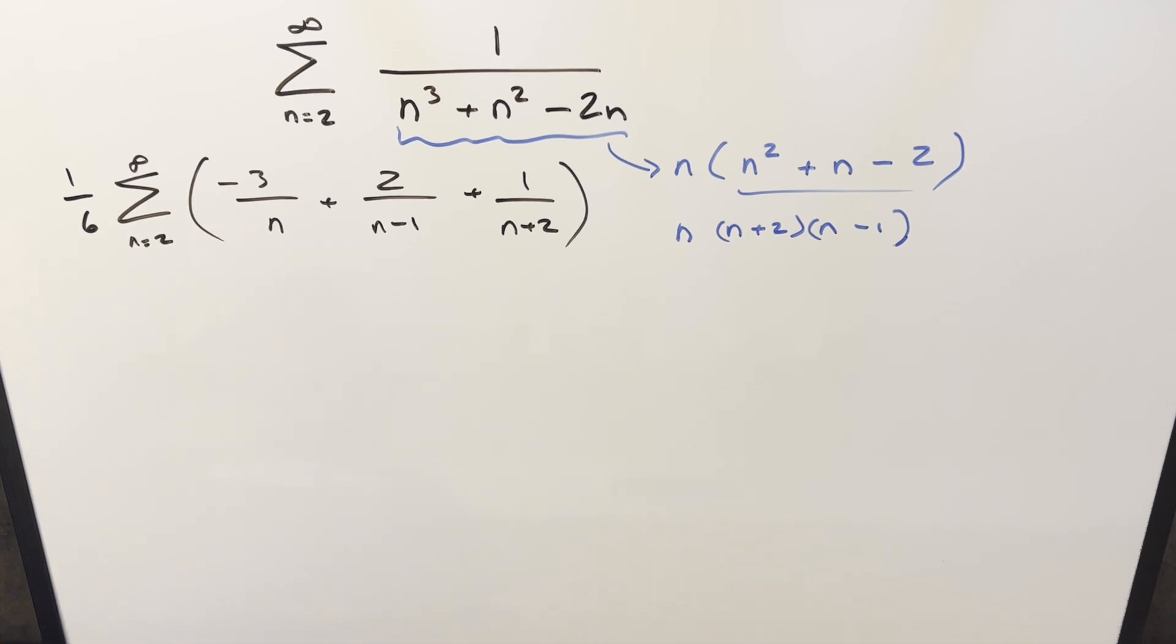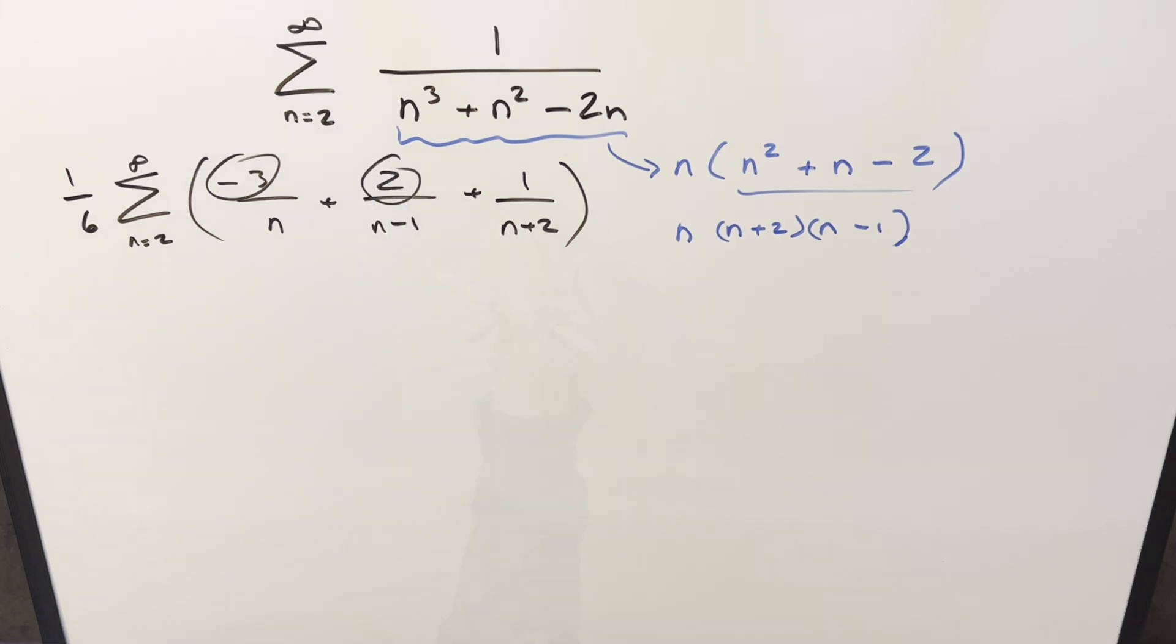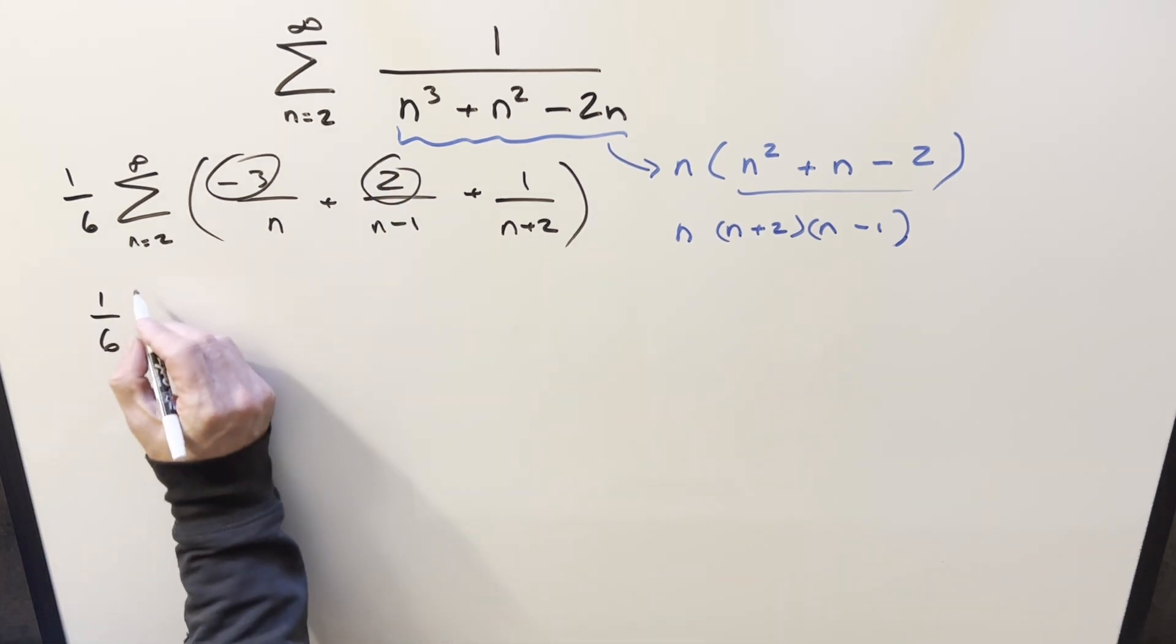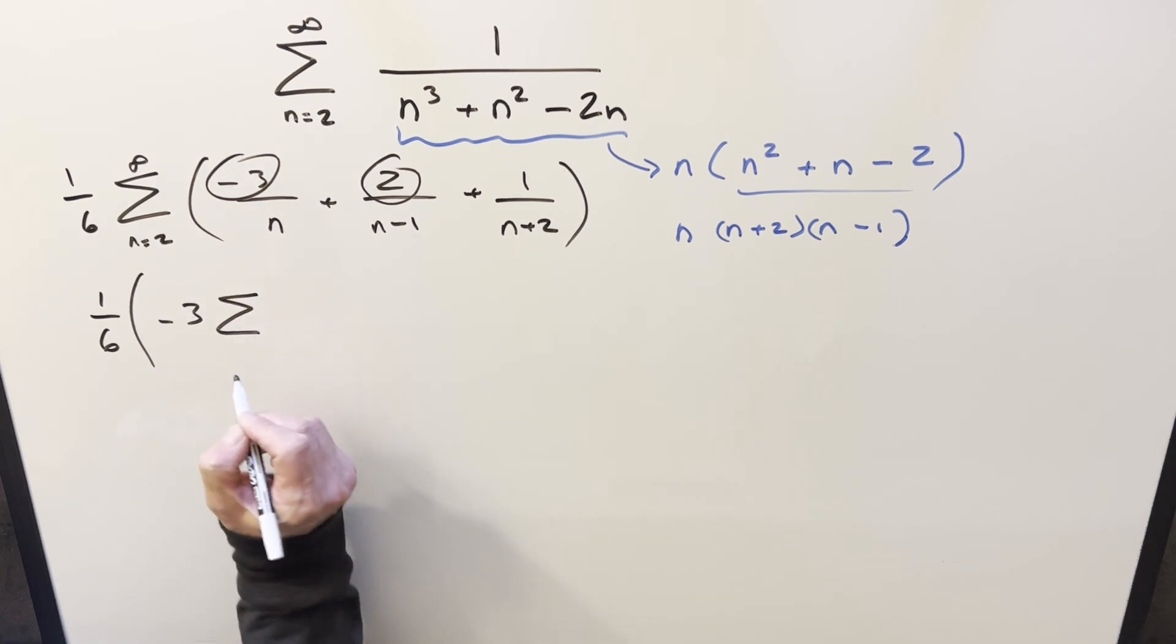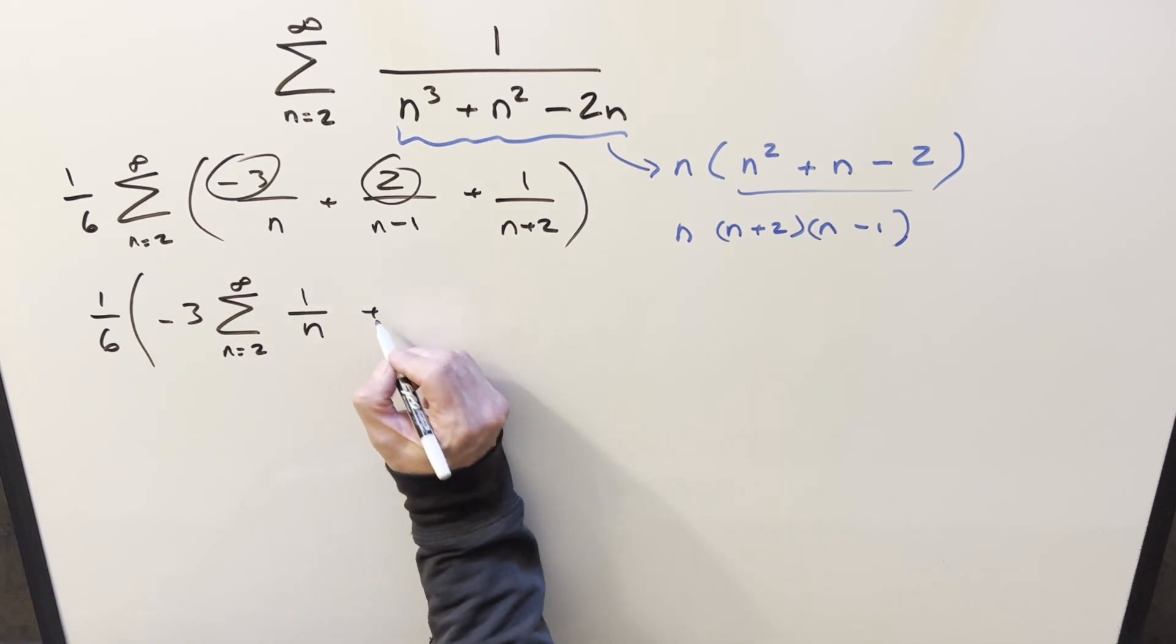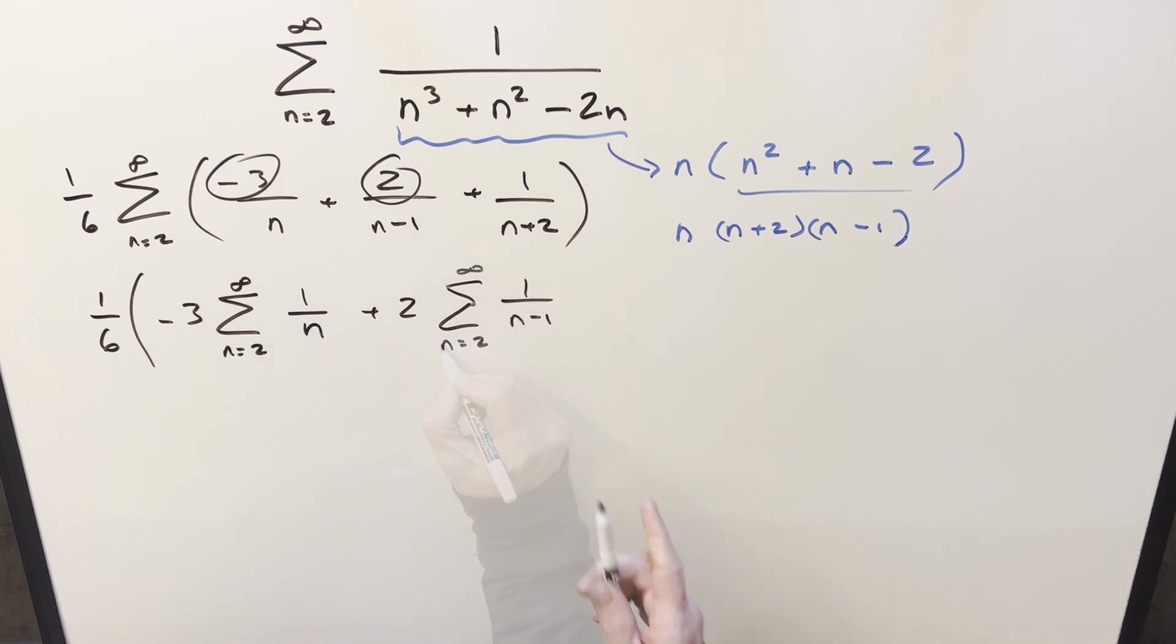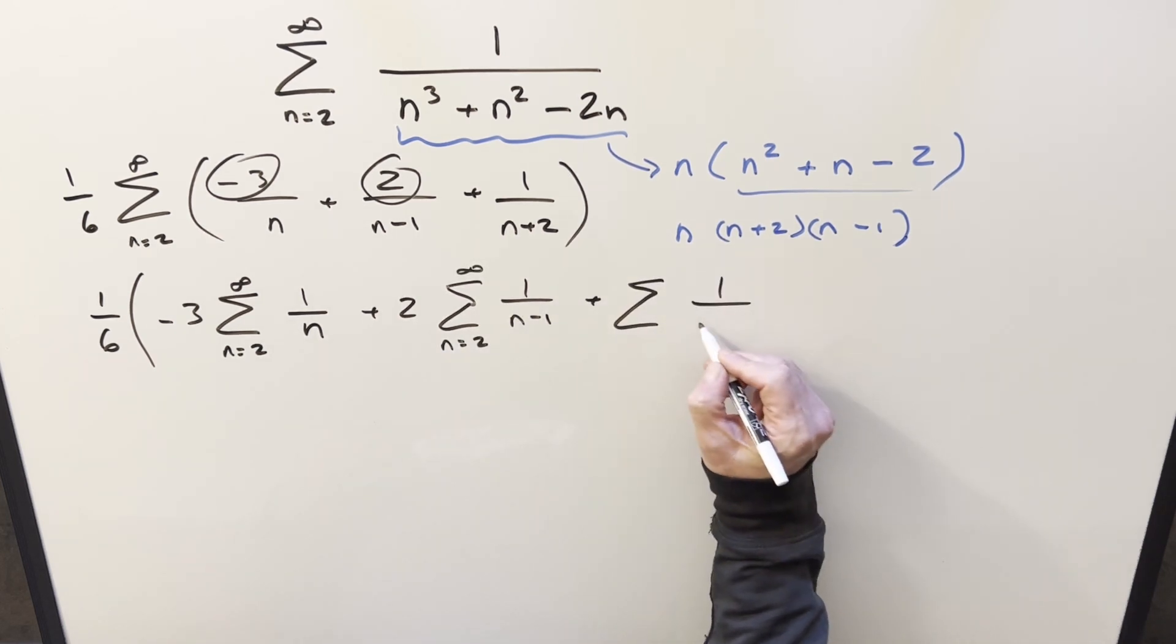What I want to do is split this up into three separate sums, and then when I do that for each of them, I can bring the constant out front. So this first one's going to be minus 3 sum, from n equals 2 to infinity, of just 1 over n. The second one will have 2, and the sum is going to be 1 over n minus 1. And for this last one, we'll basically just leave it as it is, 1 over n plus 2.